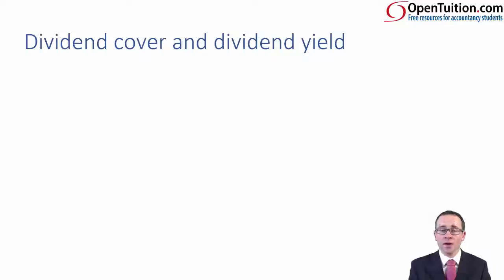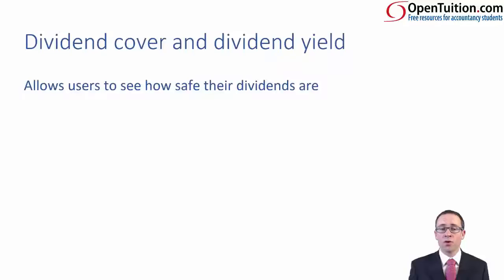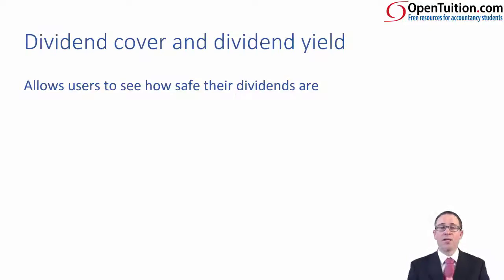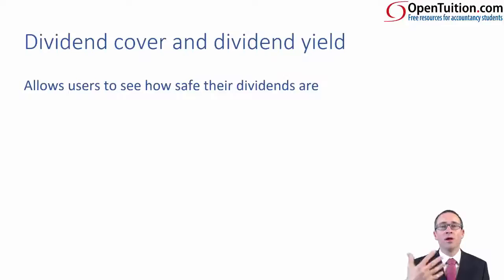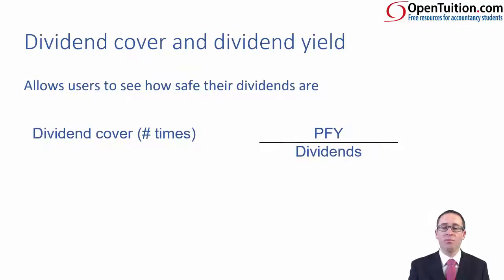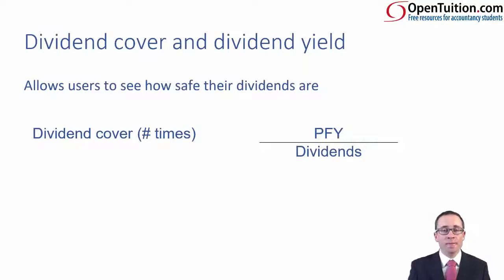The first two ratios we look at are referred to as dividend cover and dividend yield. Dividend cover allows us shareholders to see how safe our dividends are. Obviously, the more profits a company has available, the more likely you will receive a dividend and the more secure that dividend payment is. Dividend cover is measured as a number of times — it takes profit for the year and divides it by the dividends. Profit for the year comes from your statement of profit or loss; dividends will come from your statement of changes in equity.